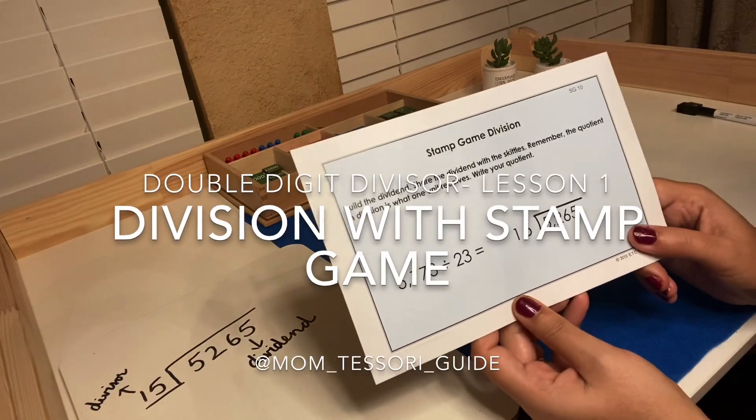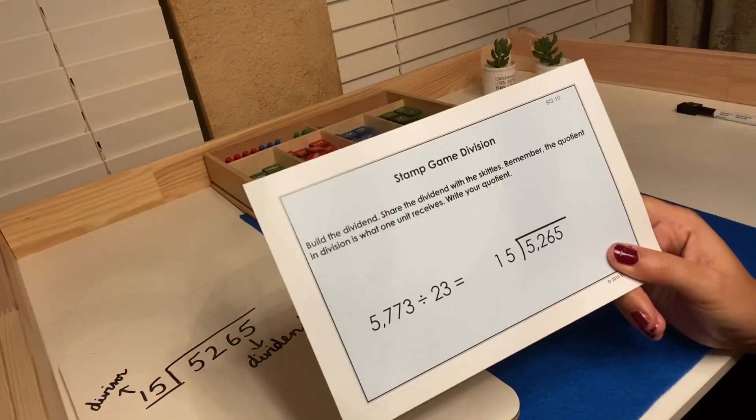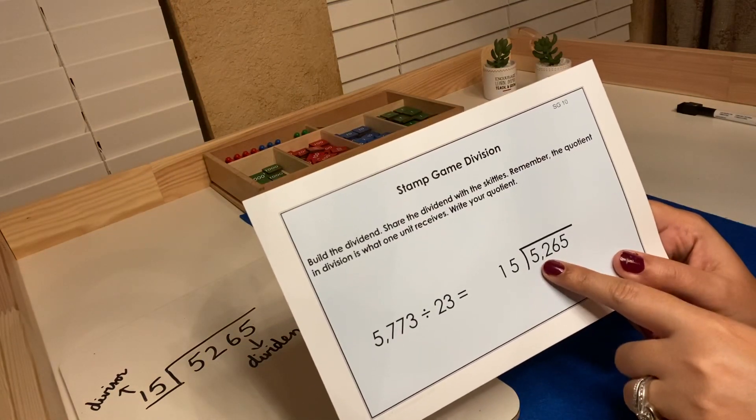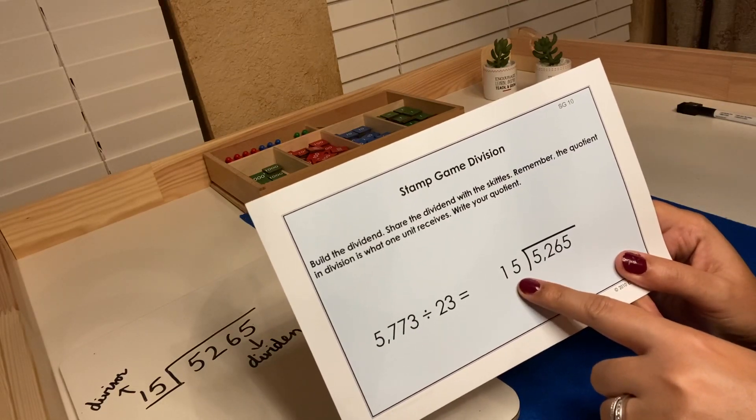Today we are working on division with a stamp game, with a double-digit divisor. Our dividend is $5,265 and our divisor is $15.